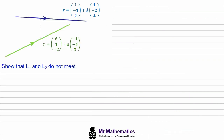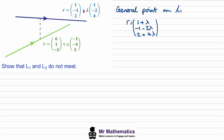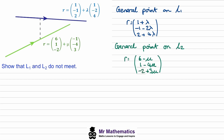In this example we've been asked to show that line L1 and line L2 do not meet — meaning they are skew lines, since we can see they are not parallel. We assume they do meet, find the general x, y, z coordinates for L1 and L2, then set them equal. The general point on L1 is (1+λ, −1−2λ, 2+4λ) and on L2 is (6−μ, 1−4μ, −2+3μ).